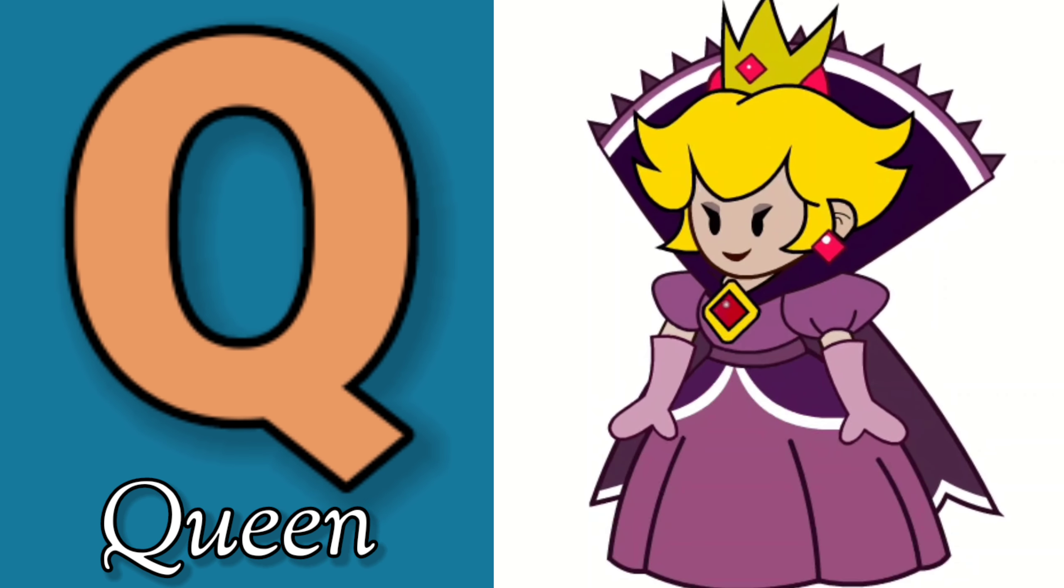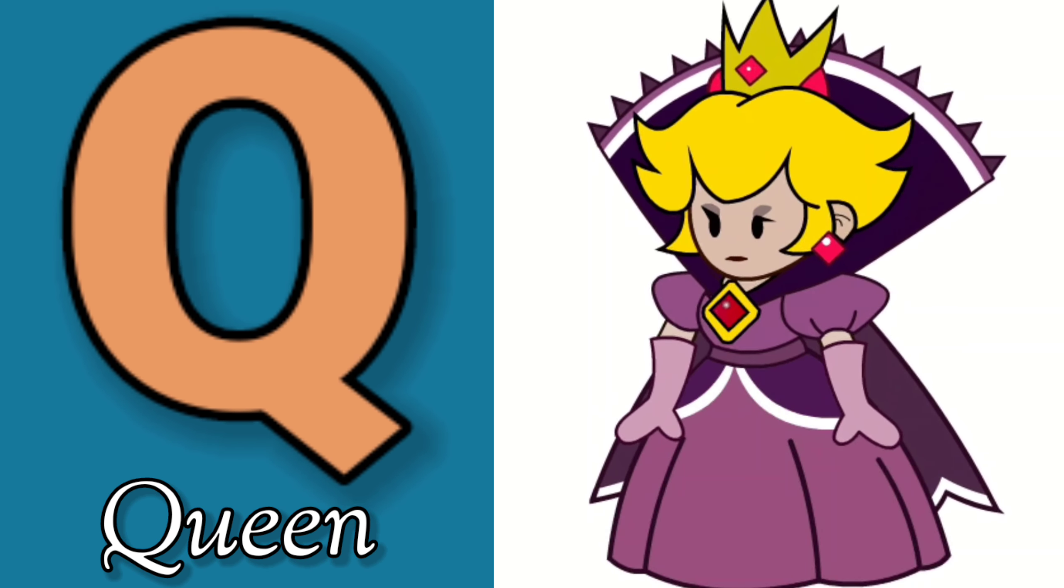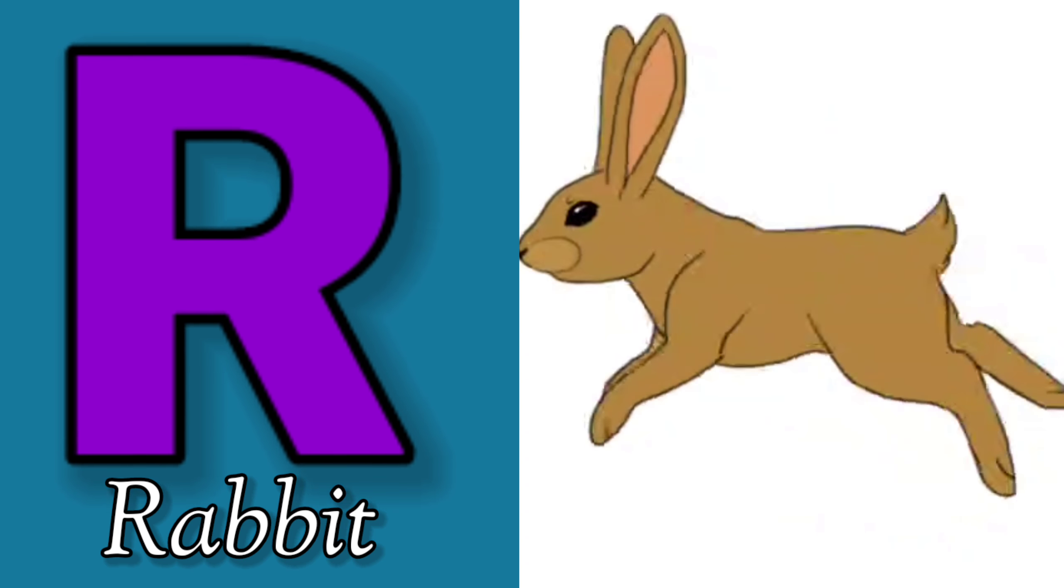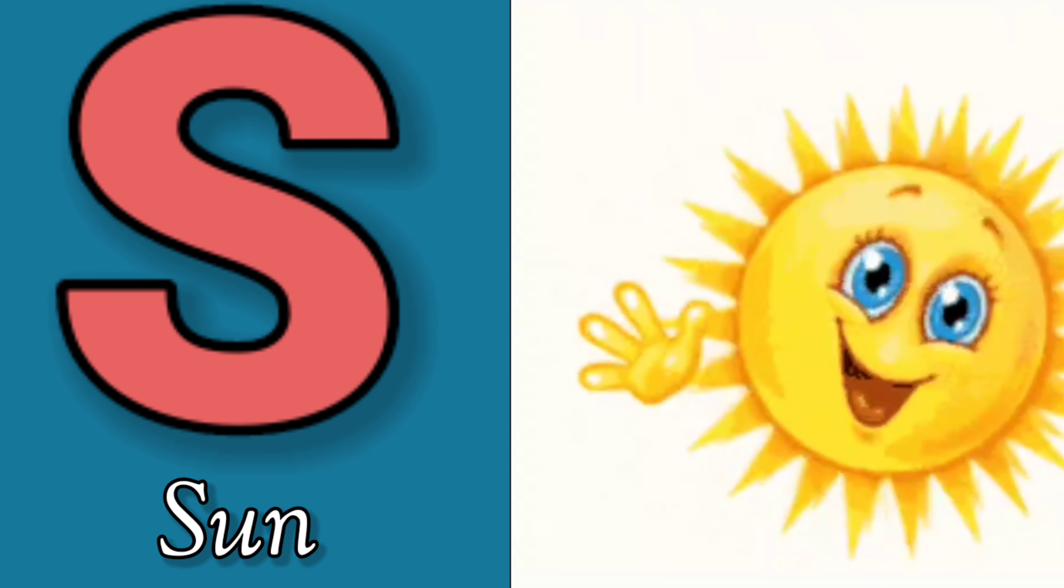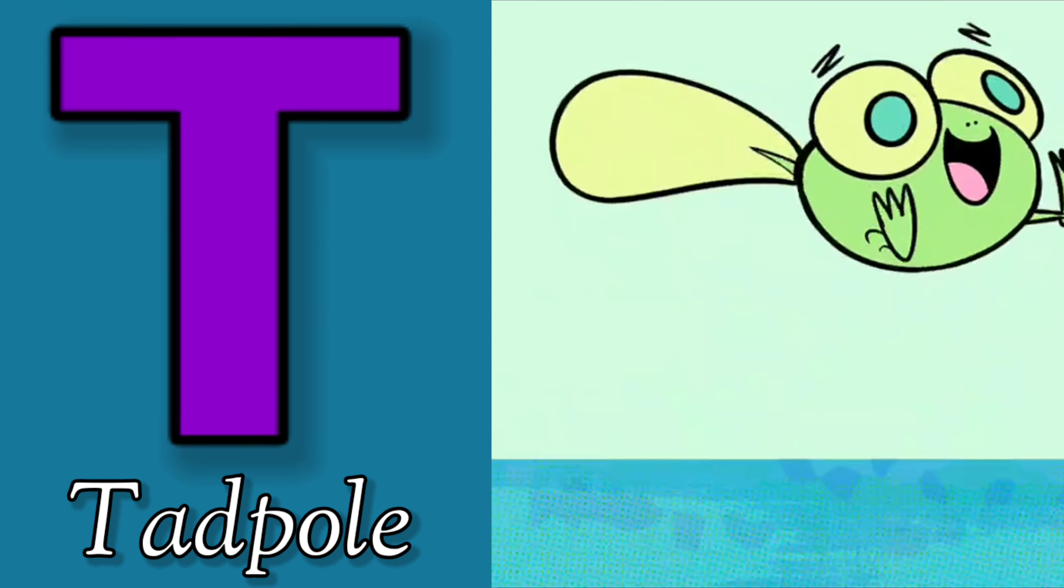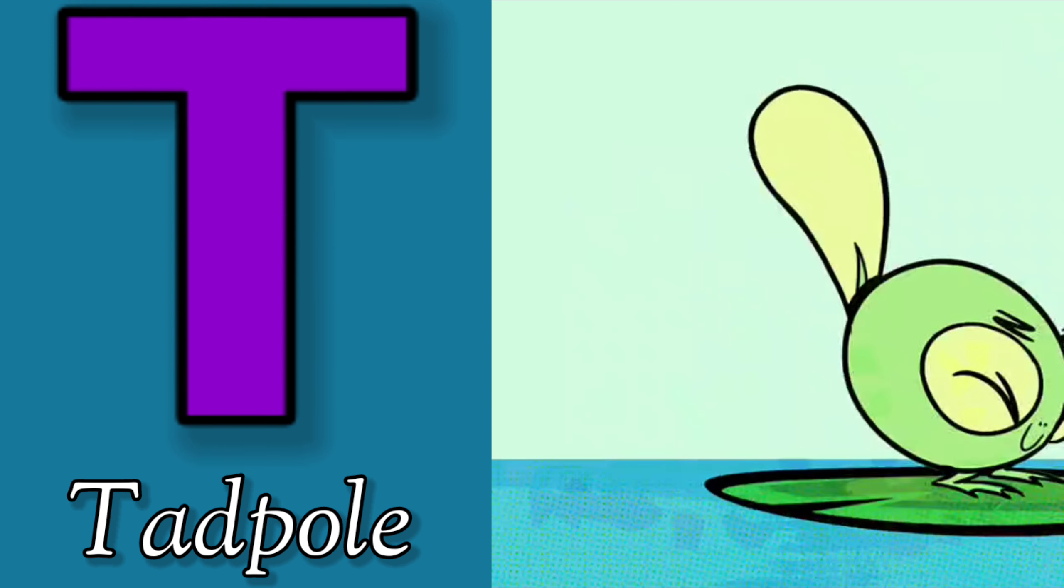Q is for Queen, Q-Q-Queen. R is for Rabbit, R-R-Rabbit. S is for Sun, S-S-Sun. T is for Toad, T-T-Toad.